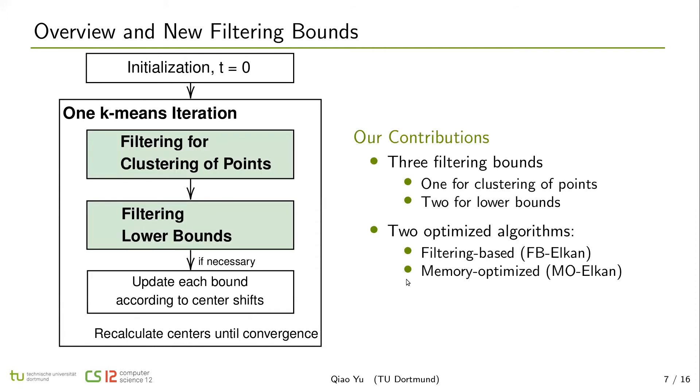And in our structure, we added additional filtering bounds into Elkan's k-means, like filtering for cluster of points and filtering lower bounds. In our contributions, by these filtering bounds, two optimized algorithms are built: Filtering-based Elkan, called FB-Elkan, and memory-optimized Elkan, MO-Elkan. In the following slides, I will introduce them one by one.